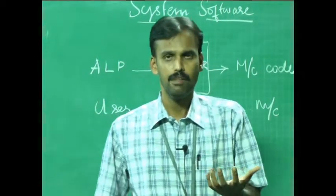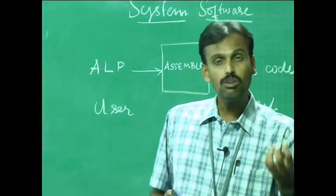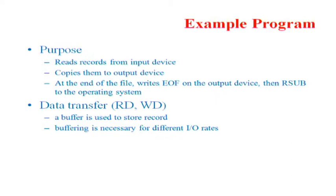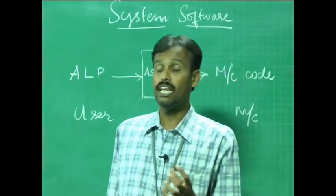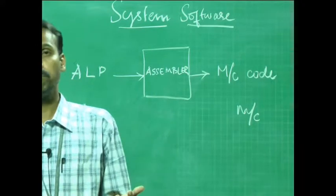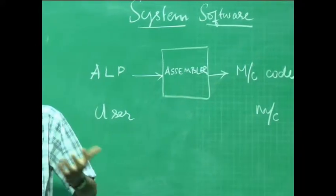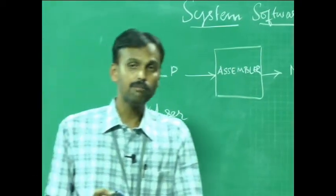The purpose of an assembly language program is to read records from the input device, copy them to the output device, and at the end of the file write an EOF on the output. It can make use of subroutines and perform data transfer — reading or writing data. A buffer is used to store all these records, and buffering is necessary for different I/O rates. The end of each record is marked with a null character, and the end of each file is indicated by a zero-length record. Subroutines like JSEB and RSEB may also be used.